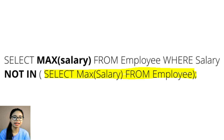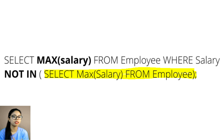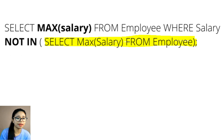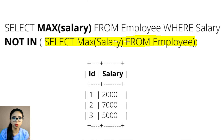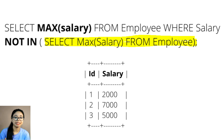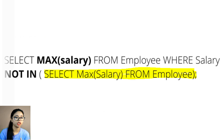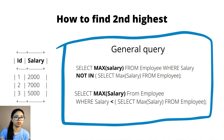When you run the query, first the inner query runs: SELECT MAX(salary) FROM employee. The table has columns id and salary, with values 1/2k, 2/7k, and 3/5k, so the max salary is 7k. Then the outer query runs: SELECT MAX(salary) FROM employee WHERE salary NOT IN (7000). The max salary apart from 7k is 5k, so it gives the second highest salary, which is 5k.